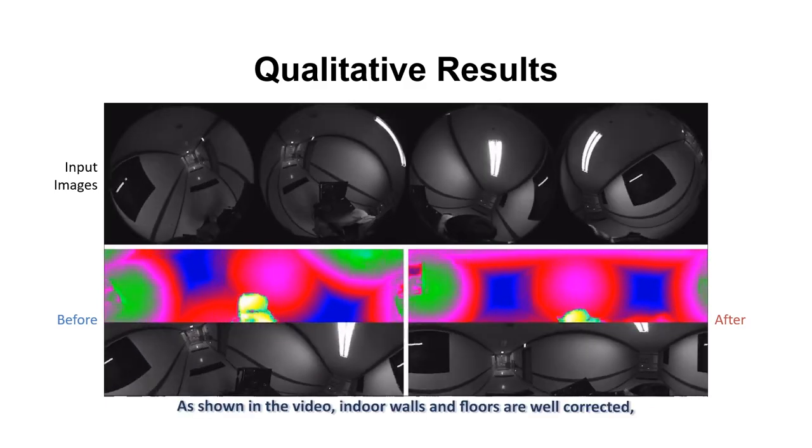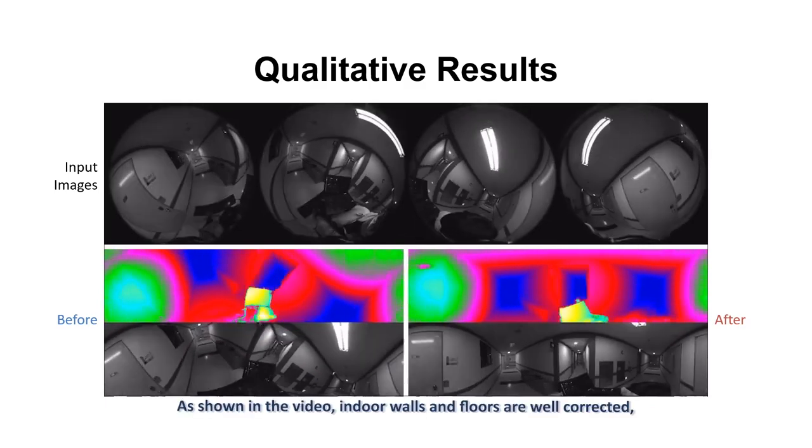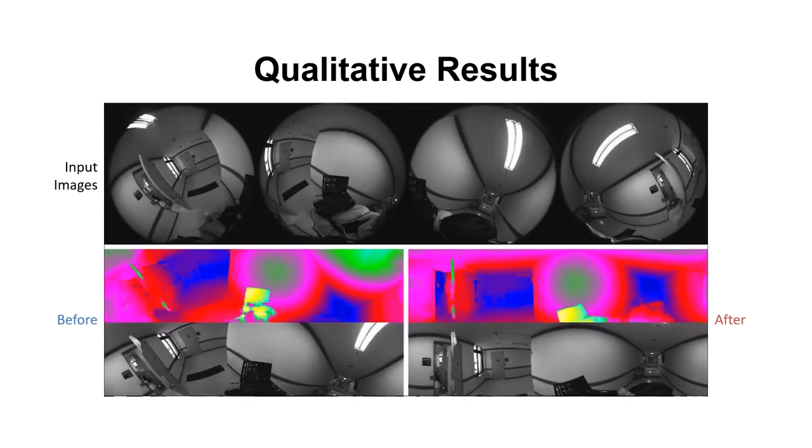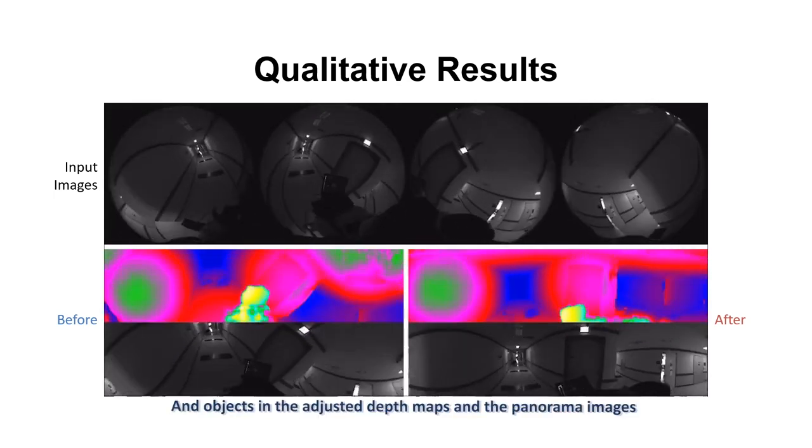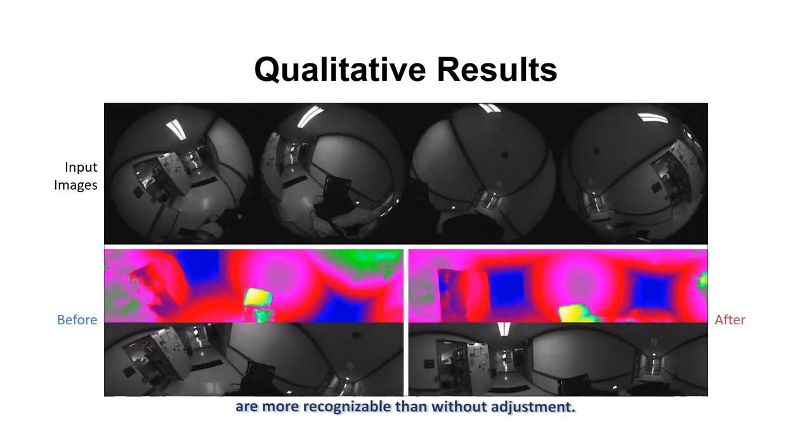As shown in the video, indoor walls and floors are well corrected. And objects in the adjusted depth maps and the panorama images are more recognizable than without adjustment.